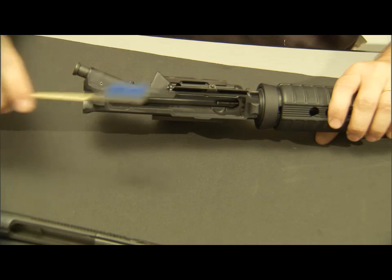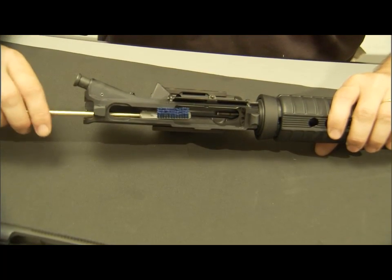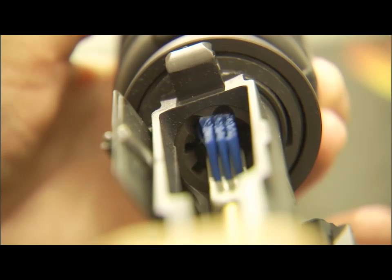Simply attach the compact receiver brush and the locking lug scraper tool to the rod handles, and you can go in and easily scrape away the carbon from the locking lug area of your firearm.